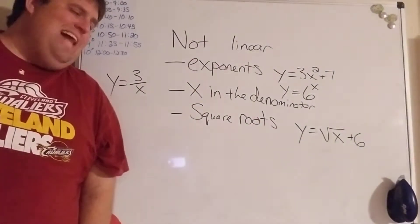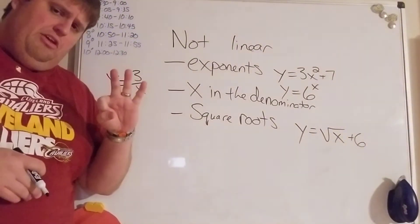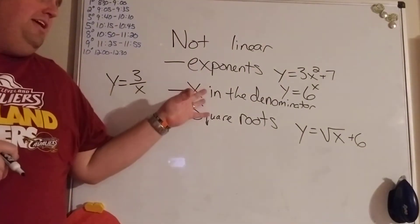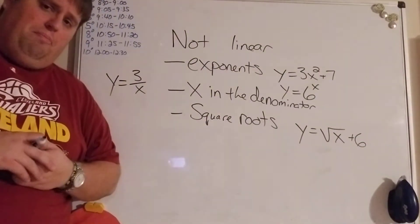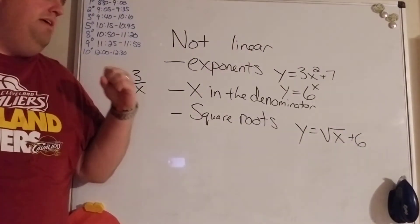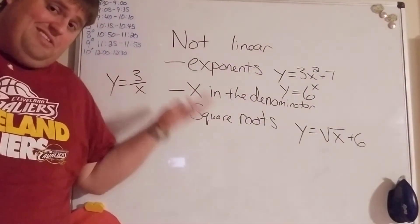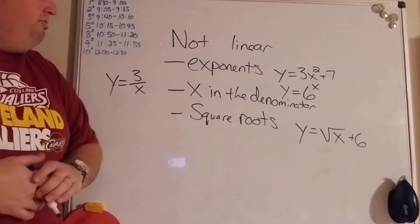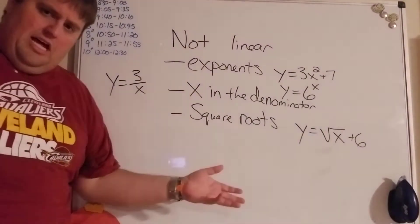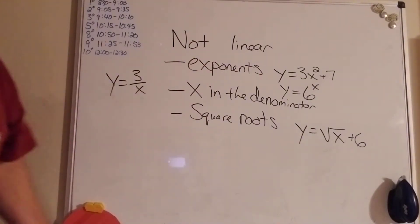So those are the big three: exponents on variables, x in the denominator, and square roots of variables. If you don't have any of these three, you can probably combine like terms, rearrange, and get it into slope-intercept form. These non-linear cases are special things you'll talk about more in Algebra 1 next year, so you'll have some basis for what's not linear.